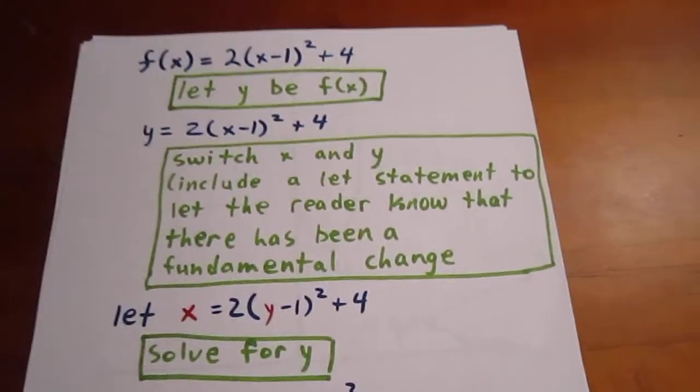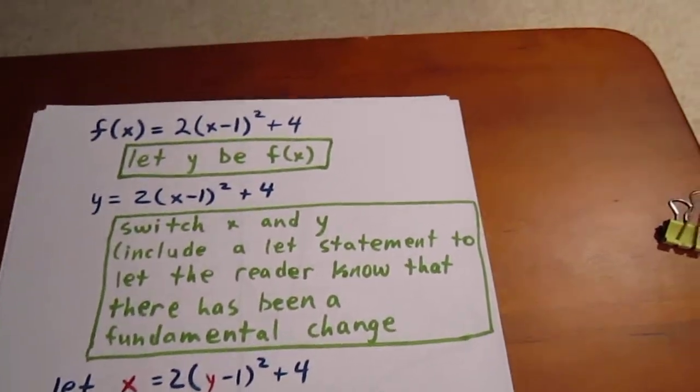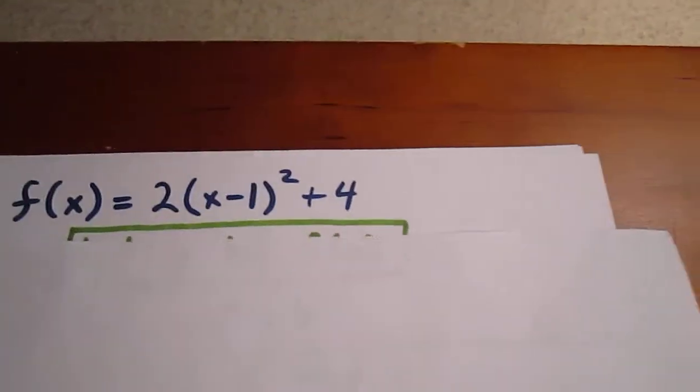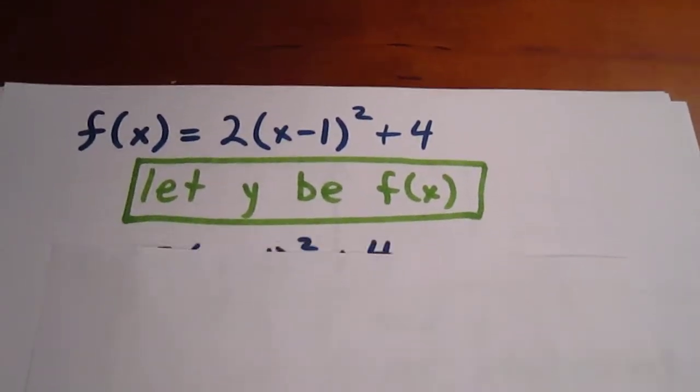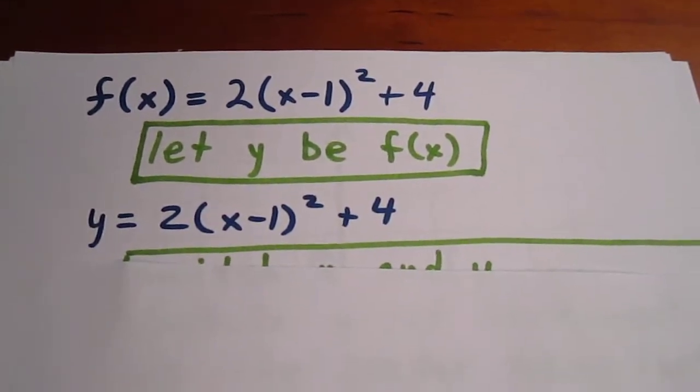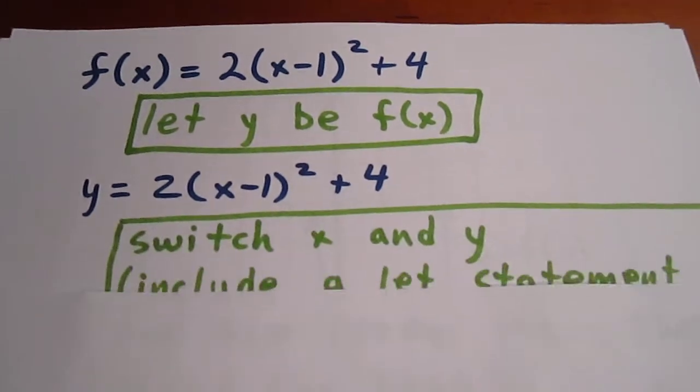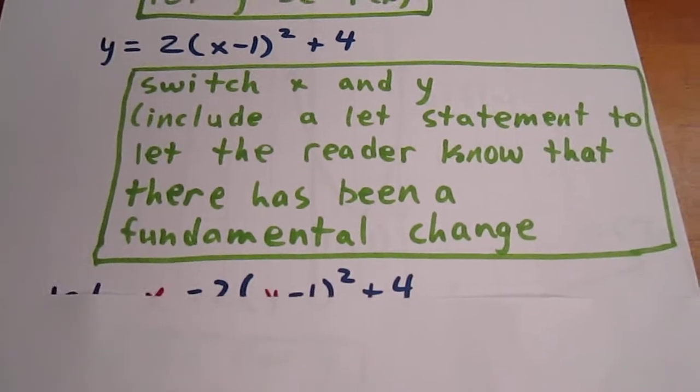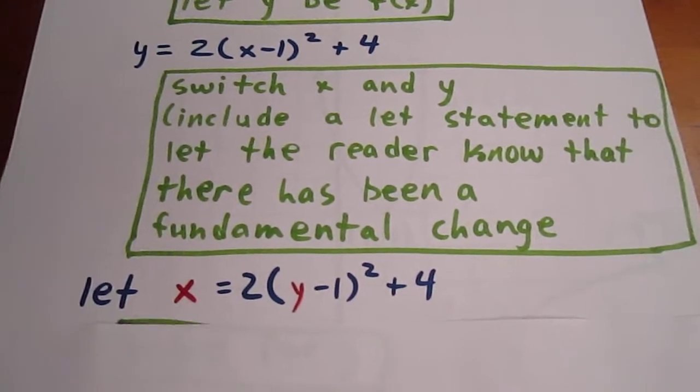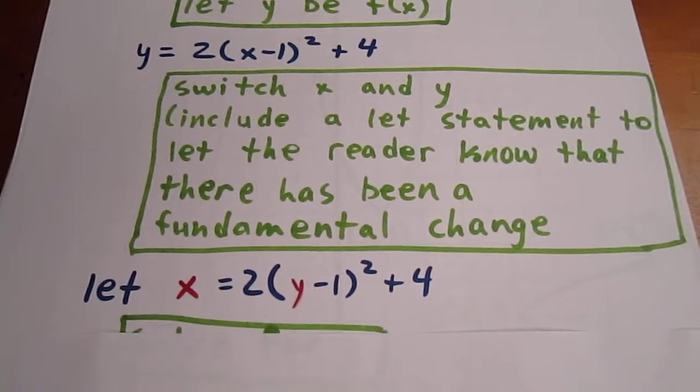We start by letting y be equal to f of x. So instead of writing f of x equals 2 bracket x minus 1 squared plus 4, we say y is 2 bracket x minus 1 squared plus 4. We switch x and y. Of course, we include a let statement to let the reader know there's been a fundamental change. So we let x equal 2 y minus 1 squared plus 4.